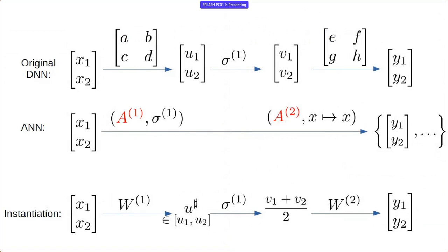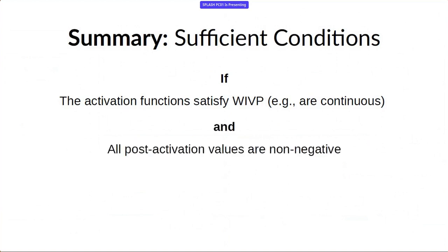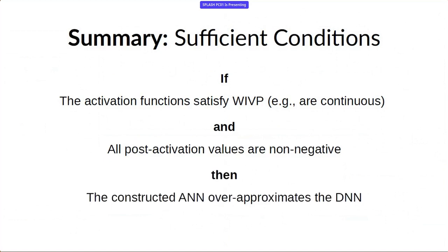These steps generalize to arbitrary mergings of nodes as long as you use reasonable activation functions. The constructed ANN over-approximates the DNN as long as the activation functions satisfy the weakened intermediate value property — essentially a weakened form of continuity — and all post-activation values are non-negative. The original INN paper focused on ReLU; this work fleshes out what you can guarantee with more general activation functions.